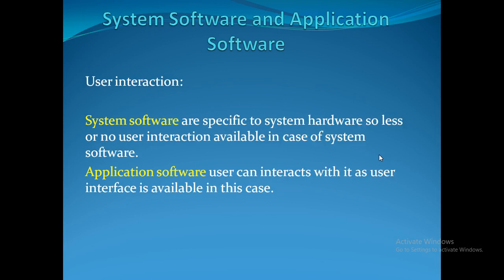Regarding user interaction: system softwares are specific to system hardware, so there is less or no user interaction in case of system software. But in the case of application software, users can directly interact with it as a user interface is available. For example, in a banking software, the user can communicate with the bank to transfer a specific amount to a person — user interaction in application software is high.